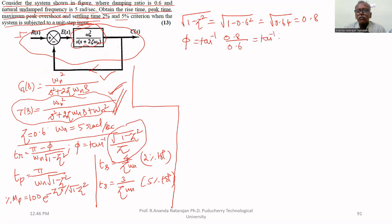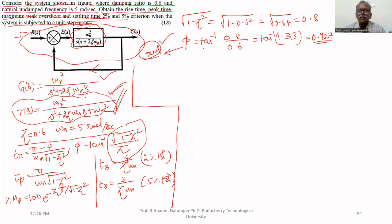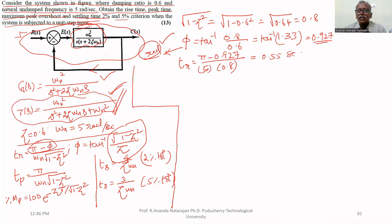tan⁻¹(1.333) equals 0.927 radians. This must be calculated in radian mode, not degree mode, because φ in radians is being subtracted from π. Therefore, tr = (π − 0.927) / (5 × 0.8) = 0.55 seconds. Peak time tp = π / (5 × 0.8) = 0.785 seconds.